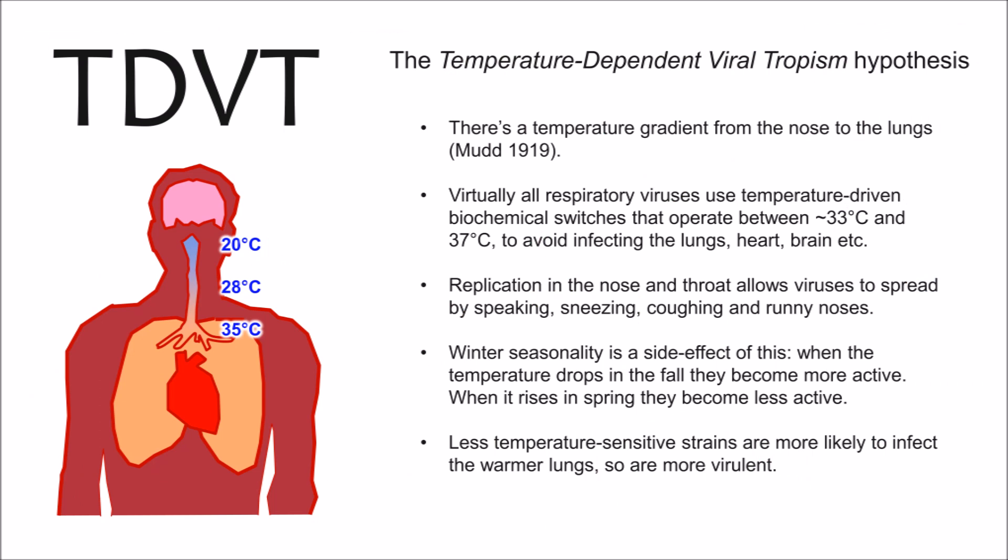My hypothesis, called temperature-dependent viral tropism, is based on the observation that there's a temperature gradient from the nose to the lungs and that the nose and throat are some of the coldest parts of the body. I suggest that virtually all respiratory viruses use temperature-driven switches that operate between around 33 to 37 degrees centigrade to avoid infecting the lungs, heart, brain, etc., because infections of those organs would immobilise their host. They normally replicate only below normal body temperature. Replicating in the nose and throat also allows the virus to be spread by speaking, sneezing, coughing, and runny noses.